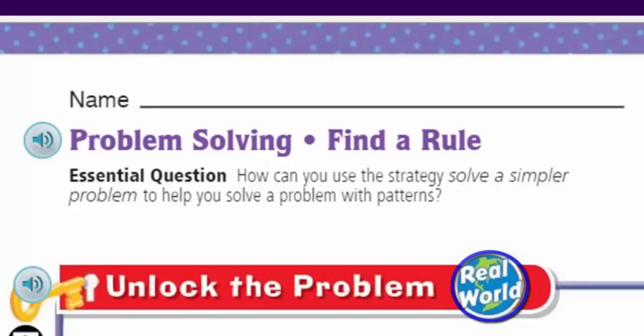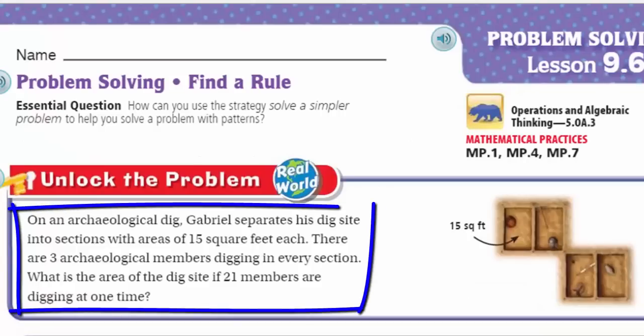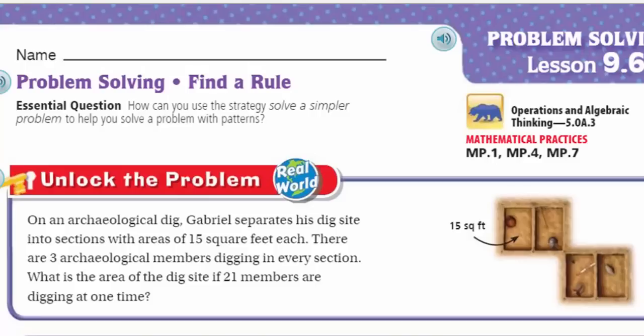It states, on an archaeological dig, Gabriel separates his dig site into sections with areas of 15 square feet each. There are three archaeological members digging in every section. What is the area of the dig site if 21 members are digging at one time? Great question.